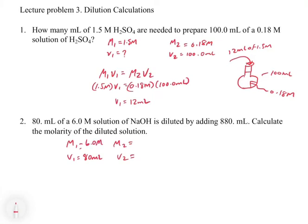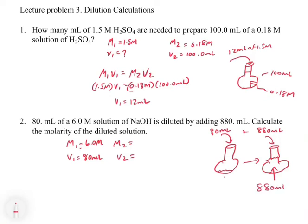For the second solution, it says it's diluted by adding 880 mls. Let's think about this. We're taking a flask and we put in 80 mls of our 6 molar solution. Then we put on top of that another 880 mls. What we have to be careful of is that the total volume at the end is not 880 mls. It's going to be 880 mls plus the 80 mls.